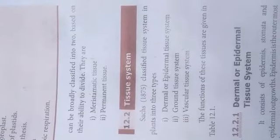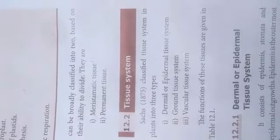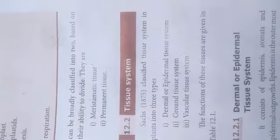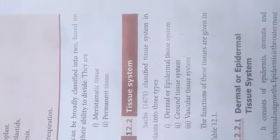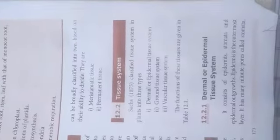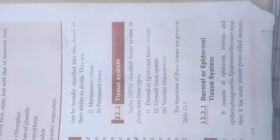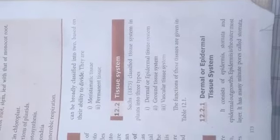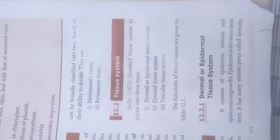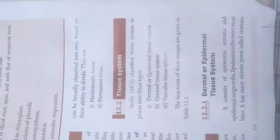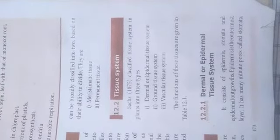The first type is meristematic tissue. This tissue is responsible for the primary and secondary growth of plants. It is undifferentiated tissue.